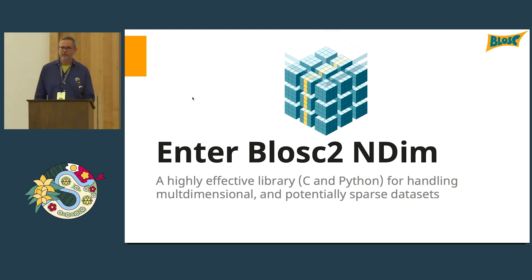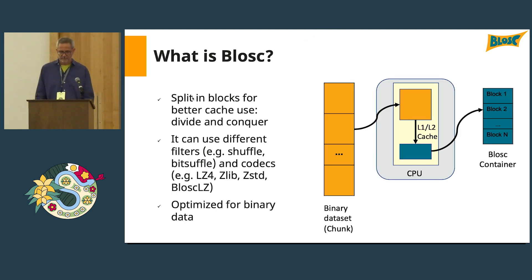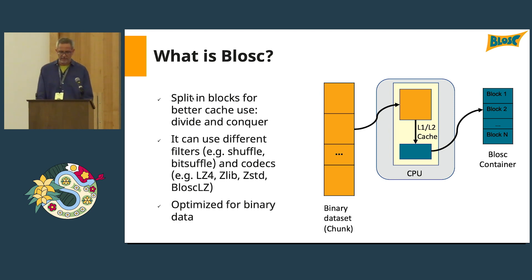To handle that, let's enter BLOSC2 NDim. BLOSC2 is a highly effective library written in C with Python wrappers for handling multidimensional and potentially sparse datasets. BLOSC is a compressor that splits data into blocks for better cache use — compressing blocks to fit into CPU caches and then decompressing inside the CPU for best performance. It supports different filters like shuffle and bit-shuffle, in combination with codecs such as LZ4, Zlib, ZStandard, and BLOSC-LZ, and is optimized for binary data.